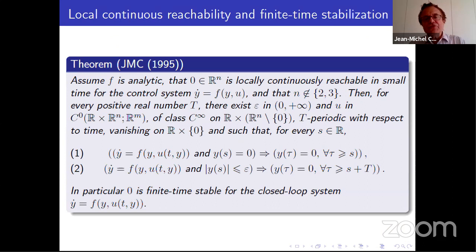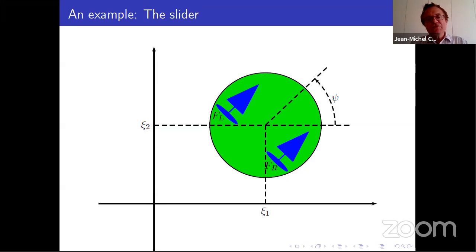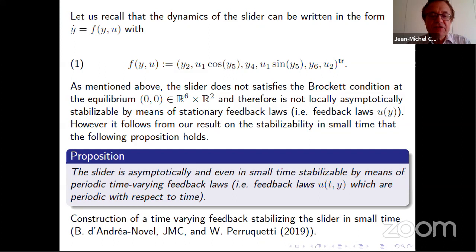Assuming the dimension is not 2 or 3, if the system is analytic with this local controllability and a control that is continuous with respect to the initial data, then you can always stabilize it in finite time by a feedback which is continuous and periodic with respect to time. Going back to the slider example, it is always complicated to get finite time stabilization for nonlinear systems, but in this case it can be done. With Brigitte d'Andréa-Novel and Wilfried Perruquetti, we constructed a specific feedback that gives stabilization in finite time.